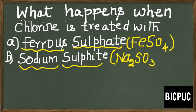Let us see what is the action of chlorine with these two compounds. Chlorine will oxidize ferrous sulfate to ferric sulfate, and chlorine will again oxidize sodium sulfite to sodium sulfate.